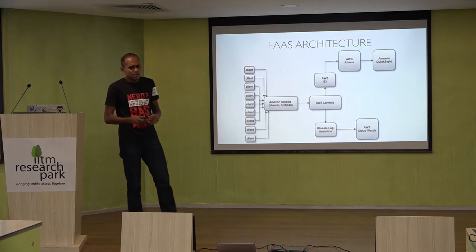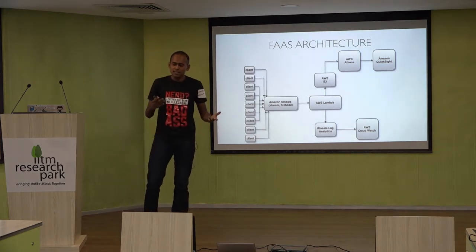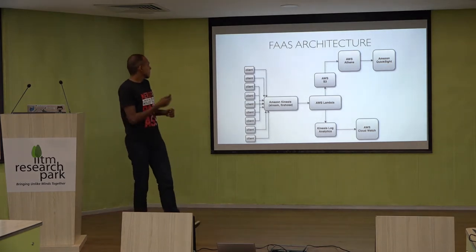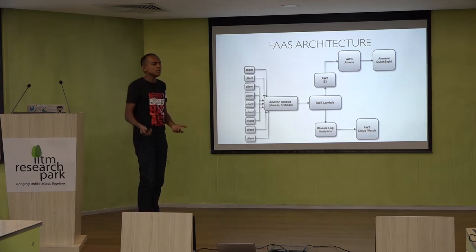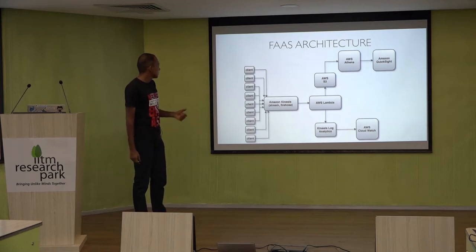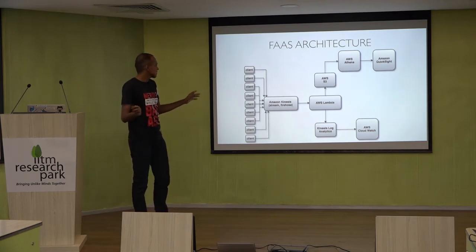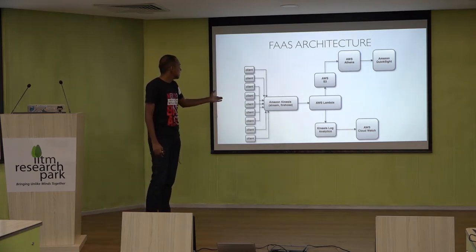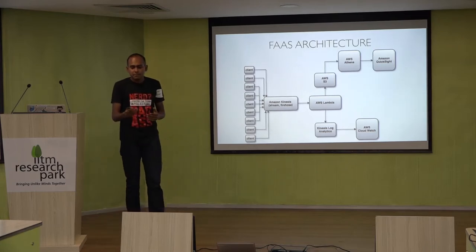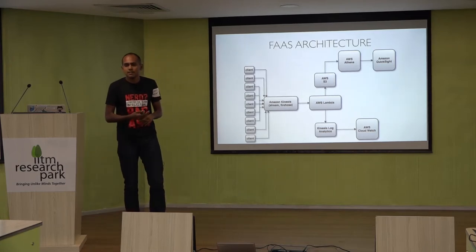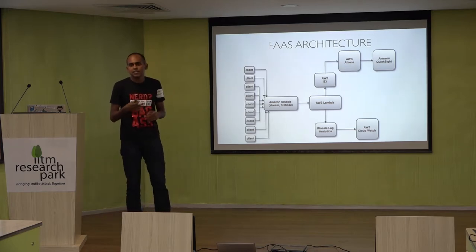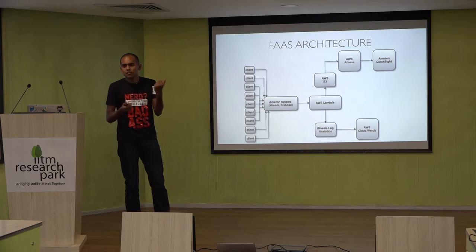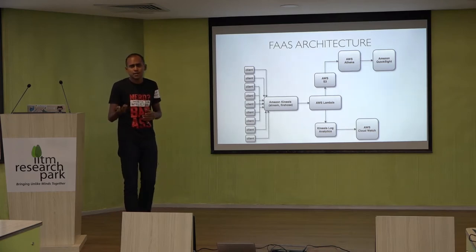Here's what our function-as-a-service architecture looks like. The clients push logs to the serverless pipeline. We have Amazon Kinesis — we replaced Kafka with Amazon Kinesis, which is a queuing service. You can easily configure producers and consumers and deliver data to the destination with just a click. We used Lambda to transform the logs on the fly instead of Logstash.